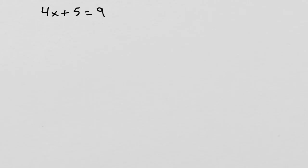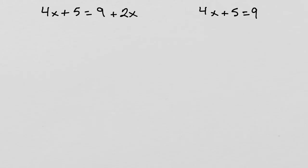Let's take a question to explain this. 4x plus 5 equals 9 plus 2x. Solve for x. In our previous videos, we have been having the x represented only once — for example, 4x plus 5 equals 9. But here, we have x represented two times. In a case like this, we want to move the x values to one side of the equation and work on it.